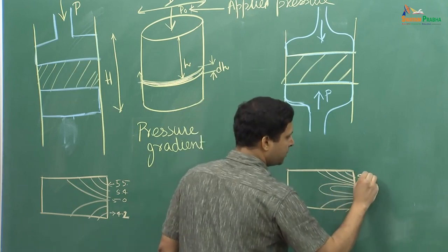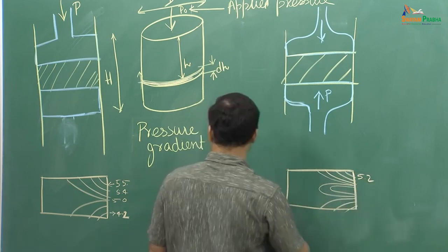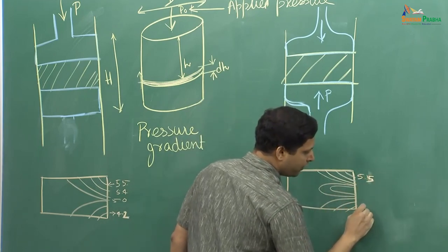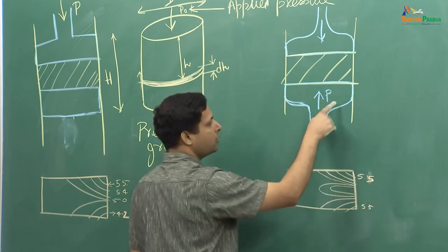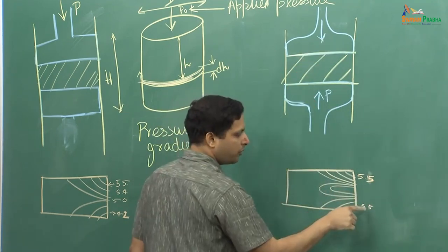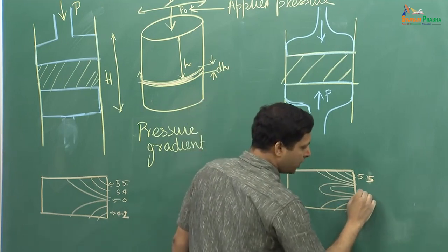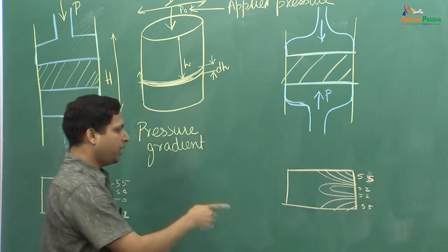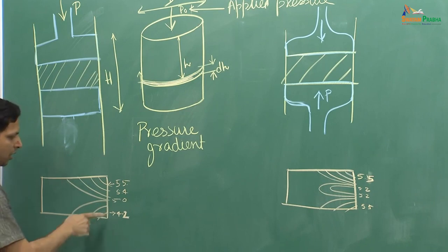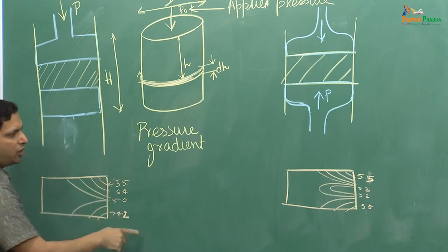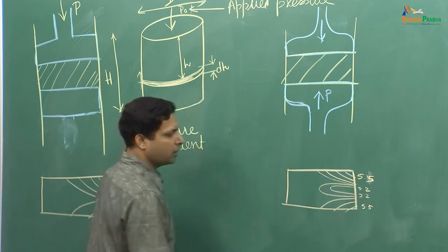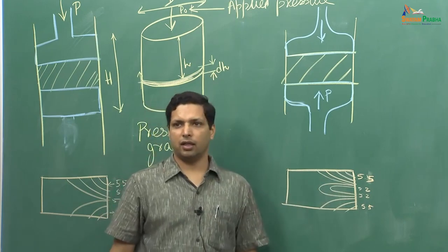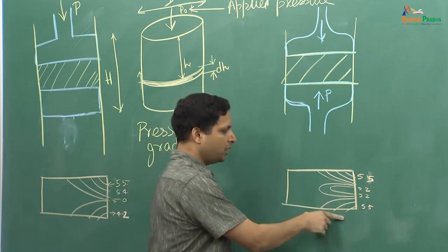If you look at the density distribution for the double-ended piston case, it may look something like this. Here you will have very high density — say 5.5 — and by symmetry it will also be 5.5 on the other end, because you are applying pressure from both sides. The density gets down to only 5.2 in the middle. Compare this with the single-ended case where it drops from 5.5 all the way to 4.2.